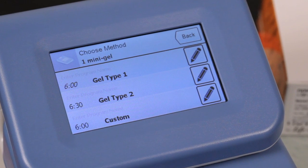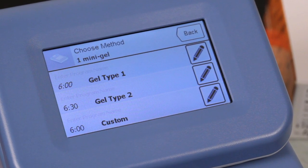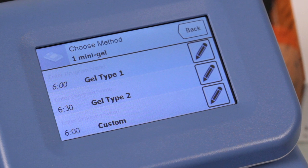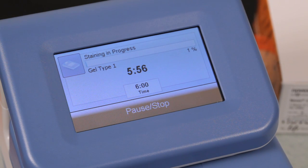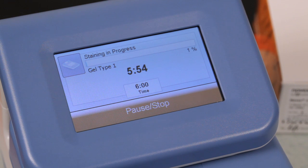The stainer comes with optimized staining methods that are pre-programmed based on gel type, gel number and gel dimensions. The staining method time can be easily customized to adjust the level of stain intensity and background based on your personal preferences.